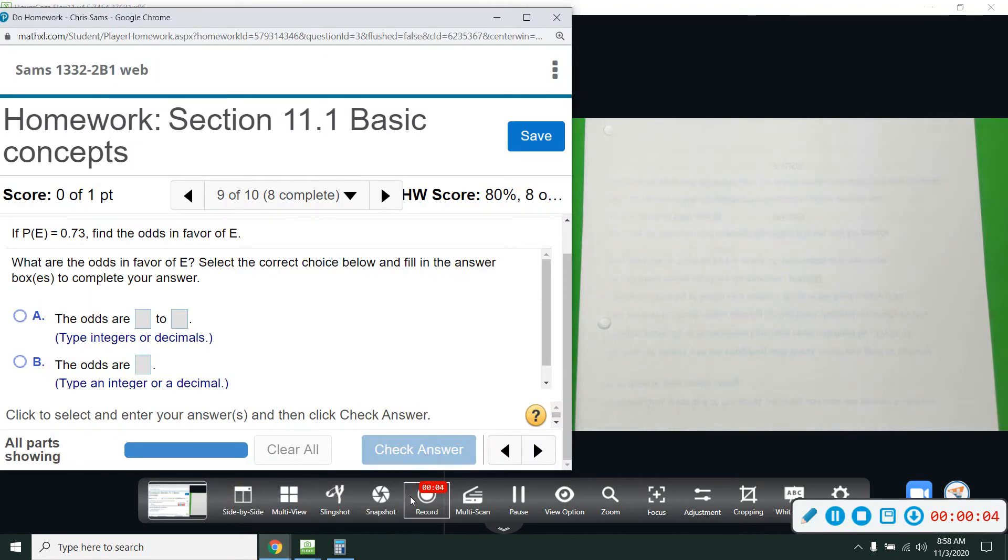Number 9, we have the probability of some event E is equal to 0.73. We want to find the odds in favor of E.